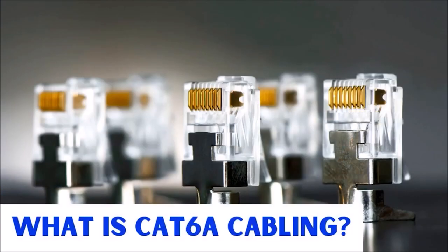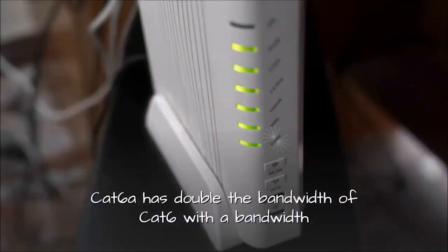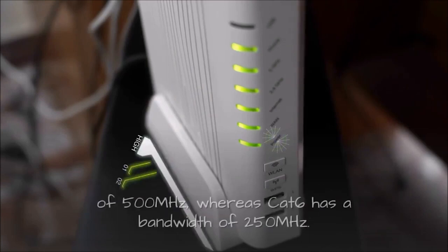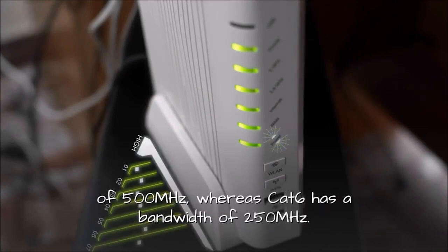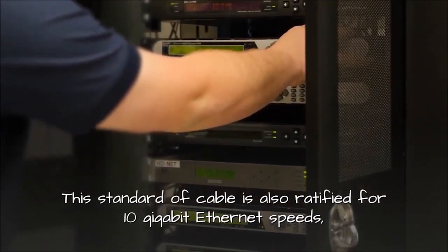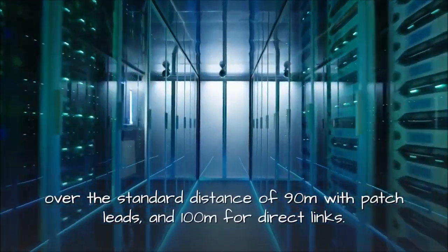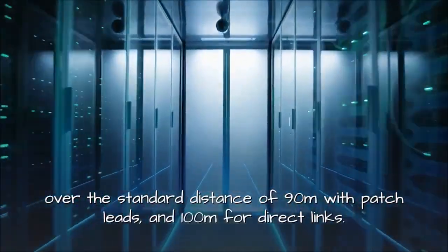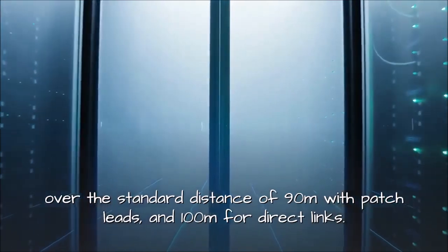What is CAT6e cabling? CAT6e has double the bandwidth of CAT6e with a bandwidth of 500 MHz, whereas CAT6e has a bandwidth of 250 MHz. This standard of cable is also ratified for 10 gigabit ethernet speeds over the standard distance of 90 meters with patch leads and 100 meters for direct links.